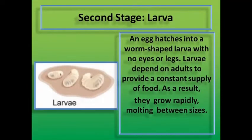Second stage: larva. An egg hatches into a worm-shaped larva with no eyes or legs. Larva depends on adults to provide a constant supply of food. As a result, they grow rapidly, molting between sizes.